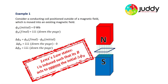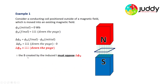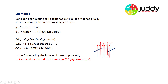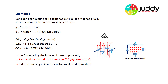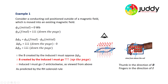Lenz's Law says that a current will be induced within this coil such that the magnetic field it generates acts to oppose the initial change in flux. So the magnetic field created by the induced current must oppose the change in flux. The change in flux was down the page, so the current must generate its own magnetic field up the page to oppose that change. We can use our right hand rule for solenoids to determine if that's going to be a clockwise or anti-clockwise direction of current. The thumb of our right hand points in the direction of the magnetic field, and our fingers curl in the direction of the current, showing a clearly anti-clockwise direction.